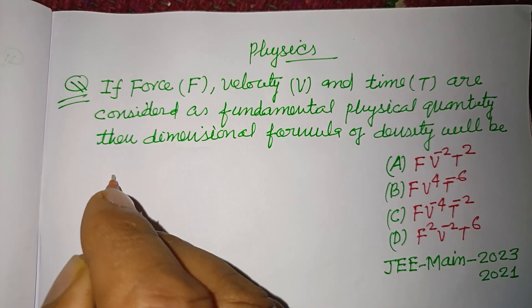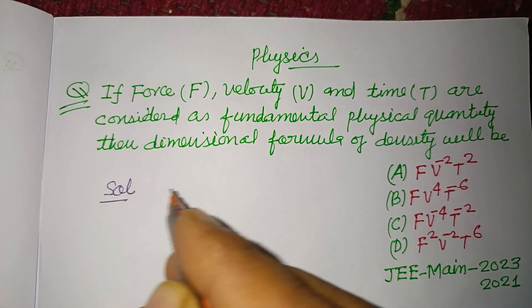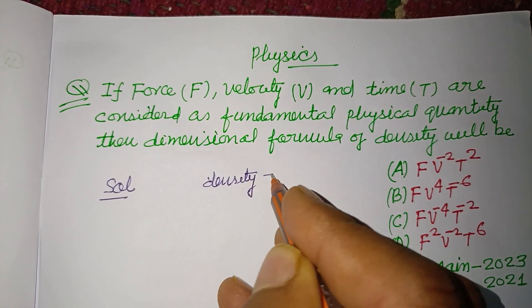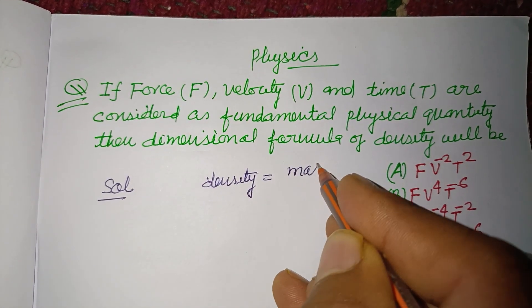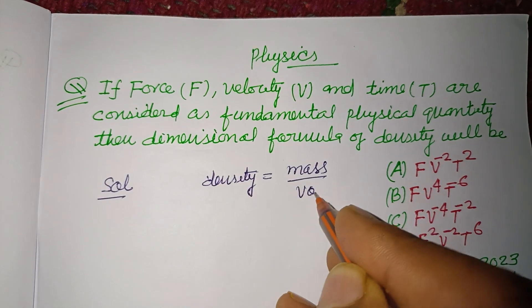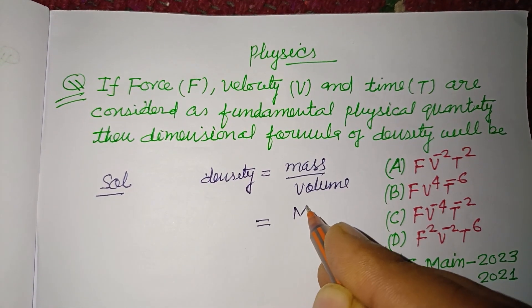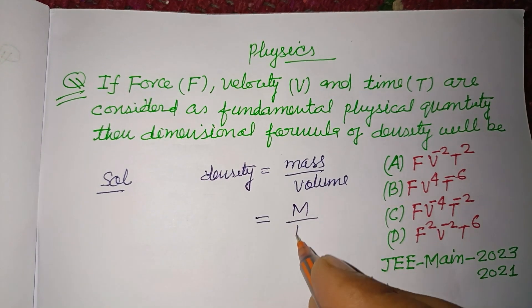We want to find the dimensional formula of density in terms of F, V, and T. You know that density equals mass over volume, which is M over L³.